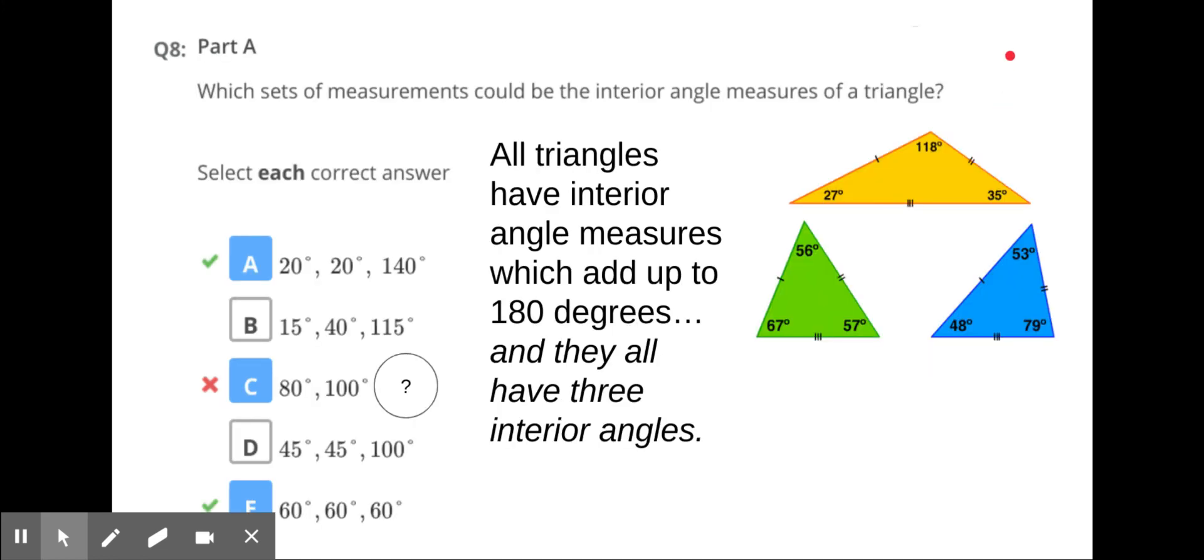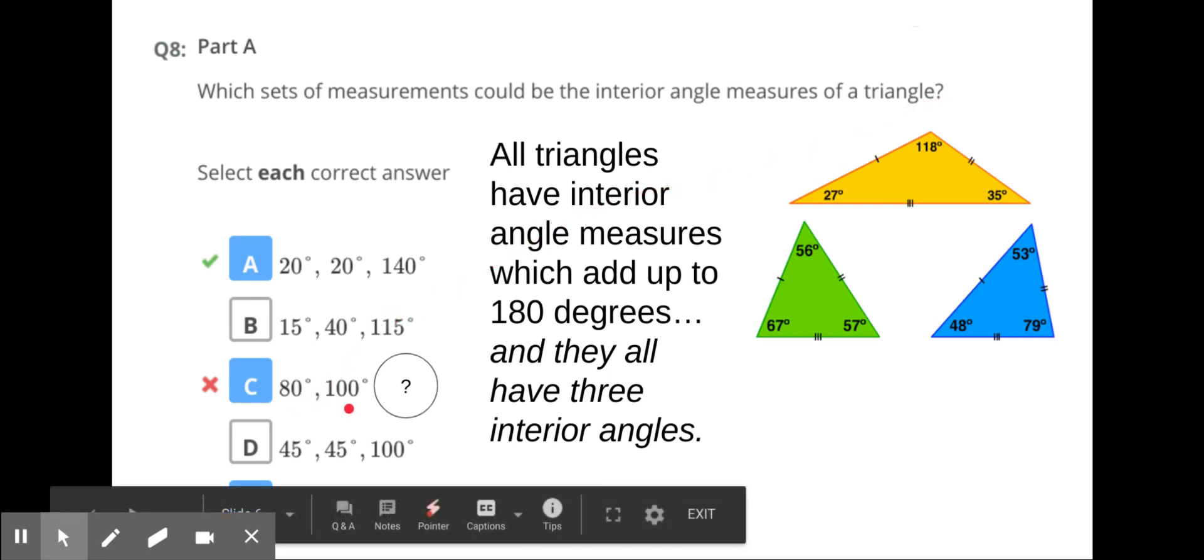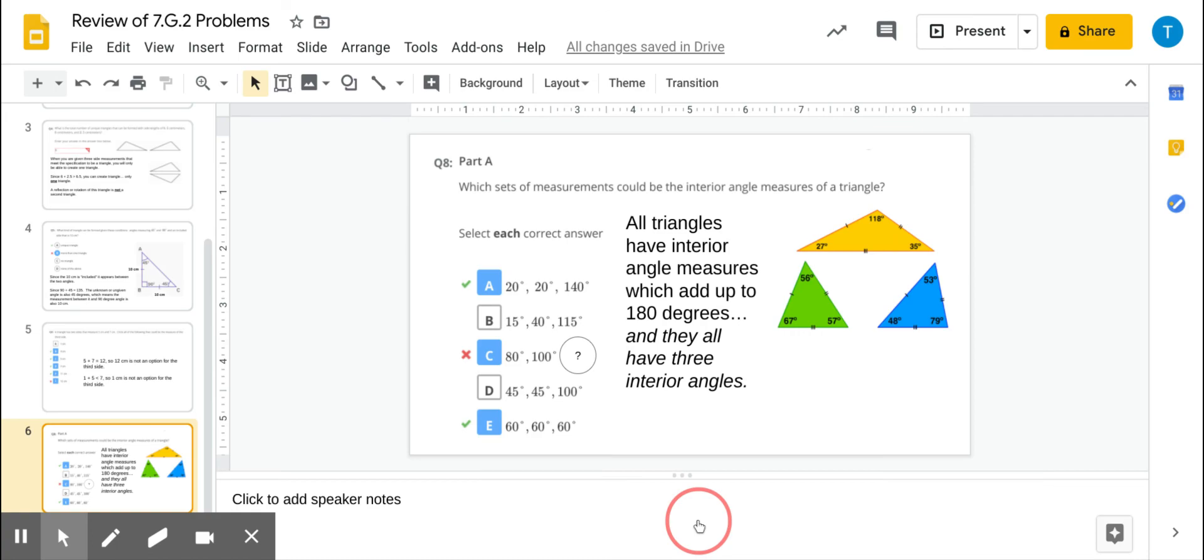Last one. For the most part, a lot of folks got this correct, but there were some folks who kept on taking that choice C. If you look at all three triangles I give here, they all add up to 180 degrees and they all have three interior angles. It's kind of hard to have a triangle with only one or two interior angles, so you're gonna pay attention to what's given to you.